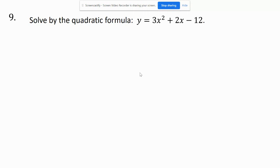I'm going to solve by the quadratic formula. First off, what is the quadratic formula? Well, that's negative b plus or minus square root b squared minus 4ac all over 2a, to the tune of Pop Goes the Weasel.